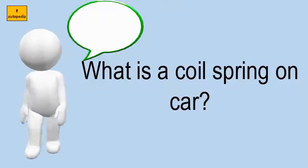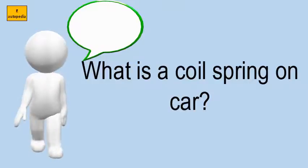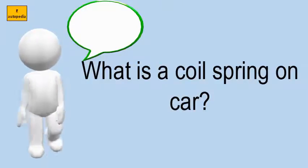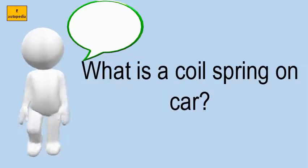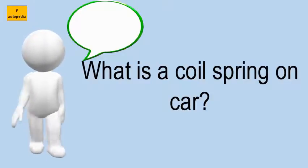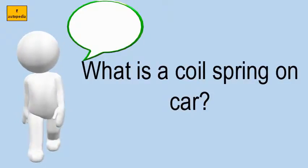A coil spring, also called helical spring, is a kind of torsion spring which can store energy and release it later when needed. It can also absorb shock and maintain the force between two contacting surfaces.